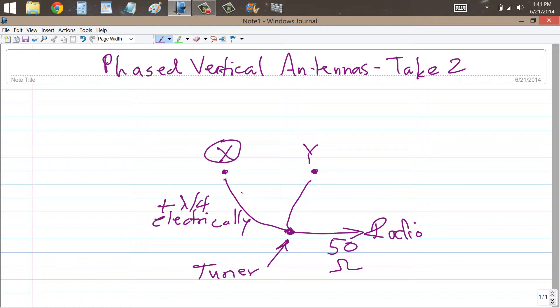These two feed line sections don't have to be any particular lengths. It's just that one of them has to be a quarter of a wavelength longer than the other electrically. And it makes sense to keep them as short as possible to minimize losses.